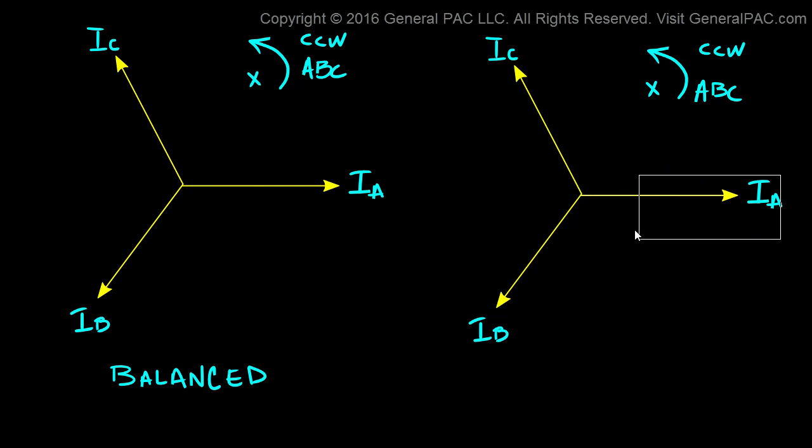To make this an unbalanced set, all we need to do is grab this phasor and make the angle between IA and IC different than 120 degrees, or the angle between IA and IB different from 120 degrees. So we could just rotate this, and as you can see, as we rotate it the angle changes. Now because the angle between these two guys are not 120 degrees, this becomes an unbalanced set.